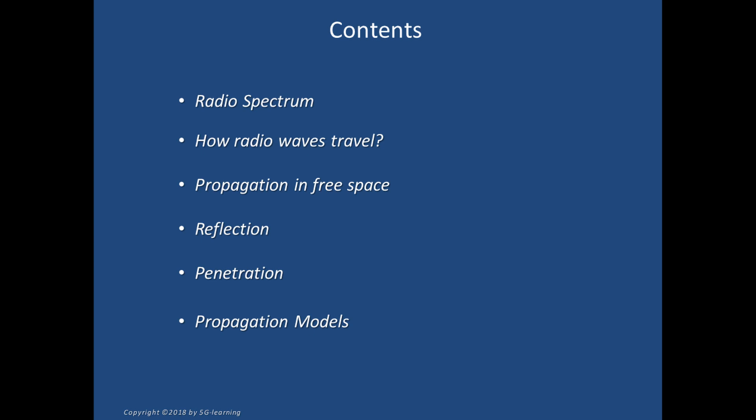We will start by the allocated spectral bands, then we will delve into the physical mechanisms that facilitate the propagation of radio waves, starting by the simplest case where no obstacles are interposed between the transmitter and receiver.